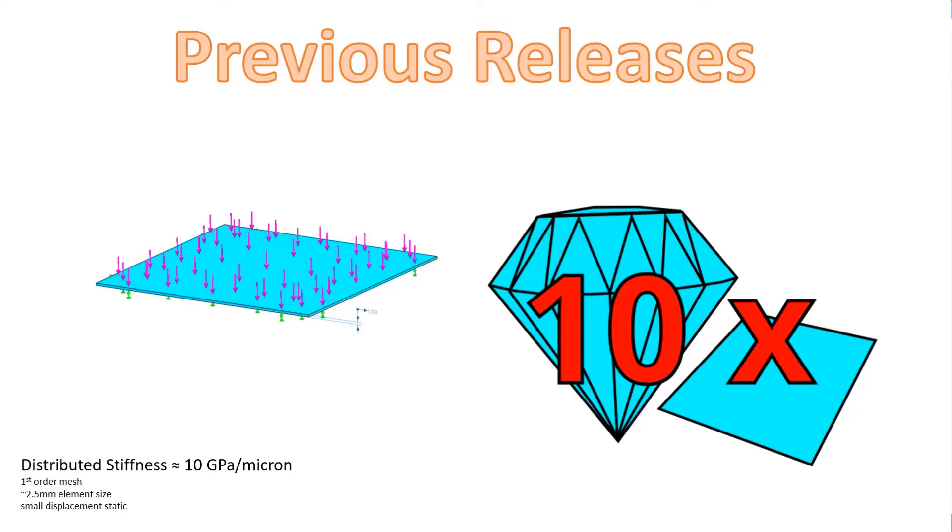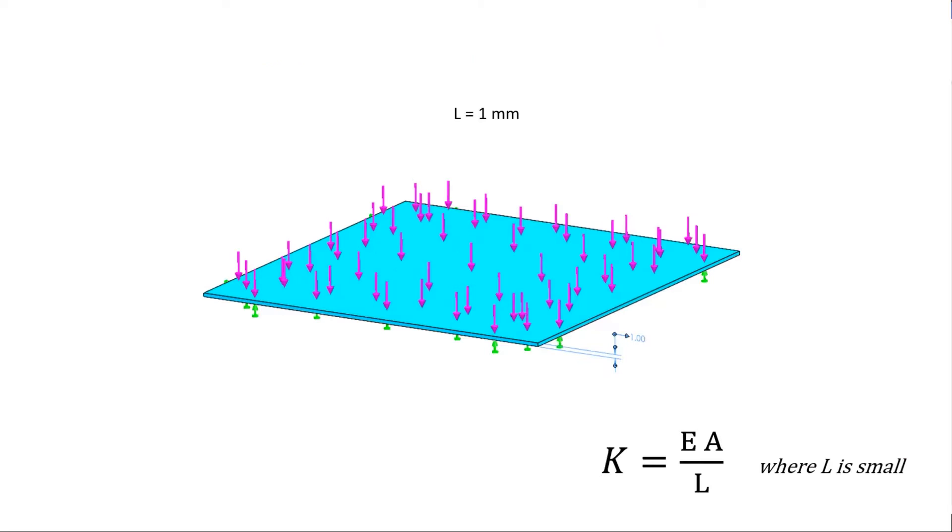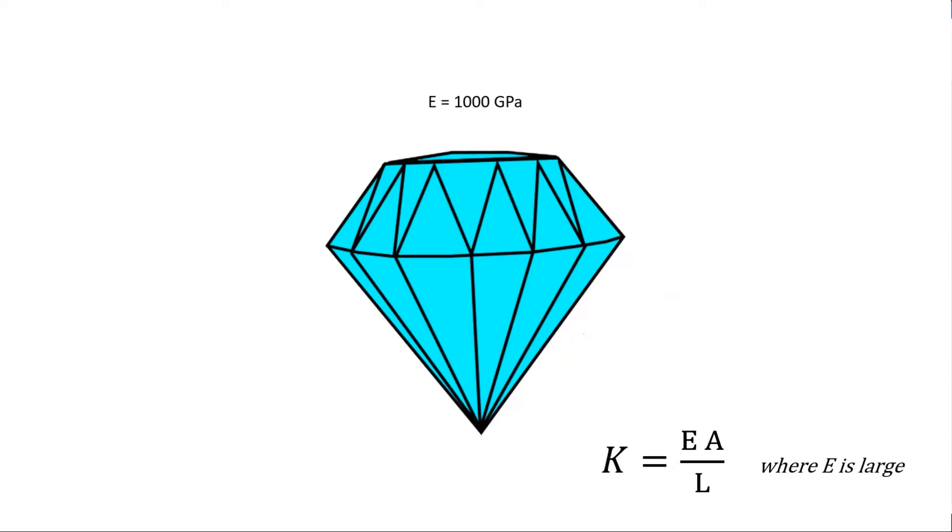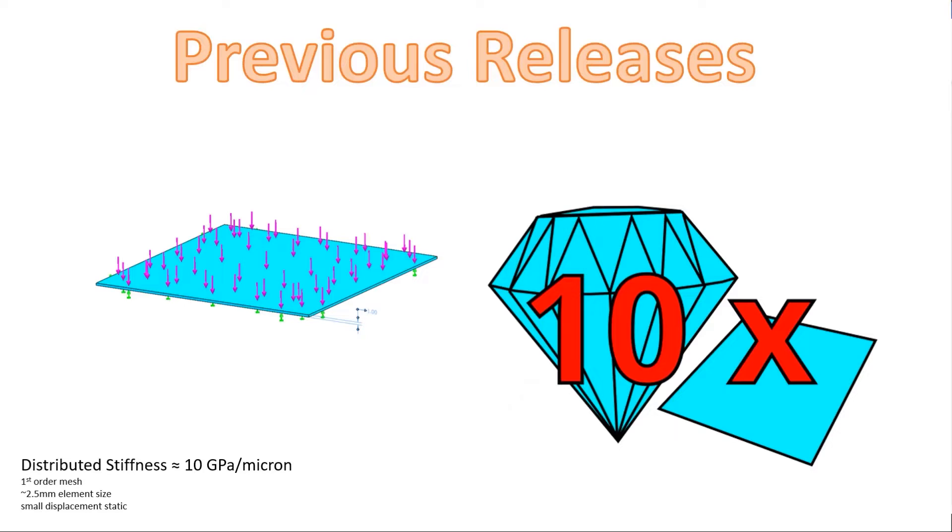In previous releases of SolidWorks simulation, contacts are stiff. Thin plates of material are stiff, and it can take a lot of force to compress and make them thinner. Diamond is also stiff. Its elastic modulus is about five times that of steel. Contact stiffness in previous releases of SolidWorks simulation can have ten times the distributed stiffness of a 1mm plate made from diamond. Ten times! This high stiffness helps minimize overclosure in your models and should yield accurate contact behavior in most scenarios.